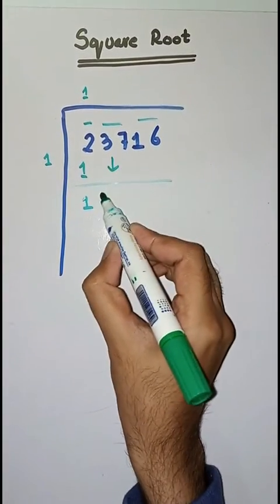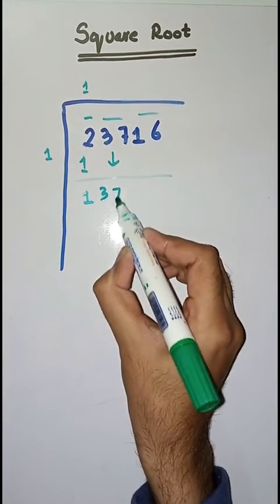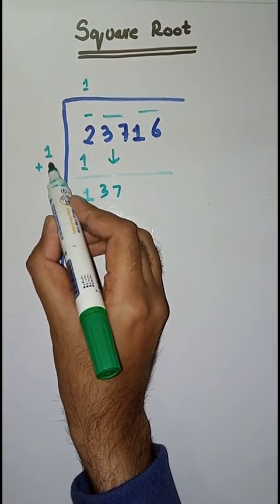Next pair is 37. This one is 3. 1 plus 1 is equal to 2.